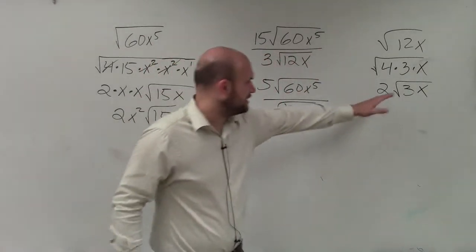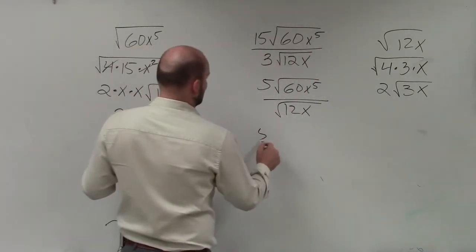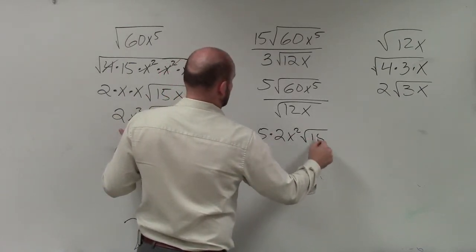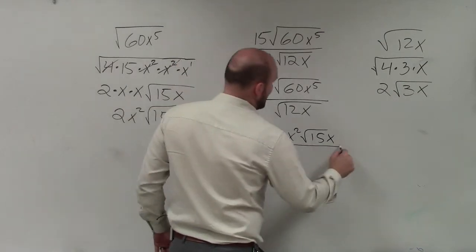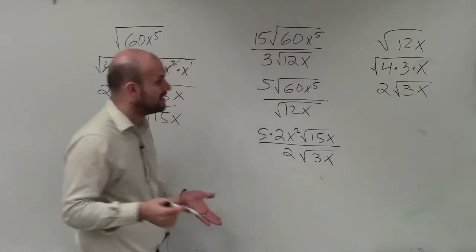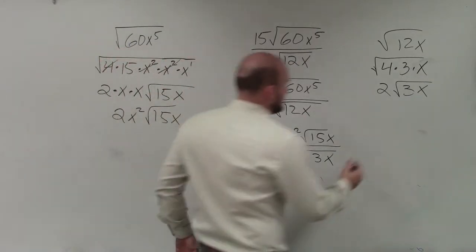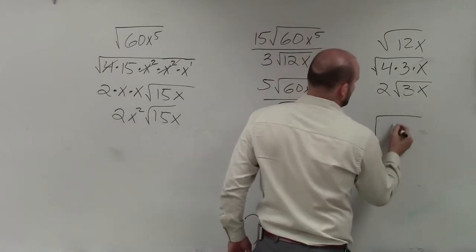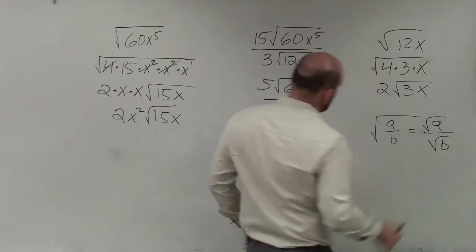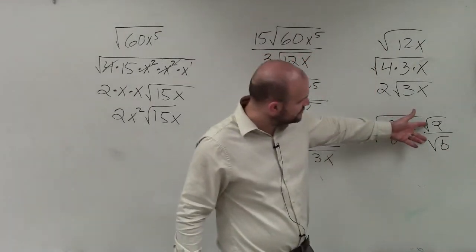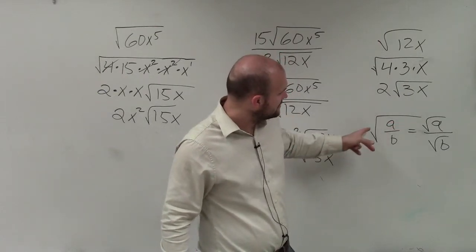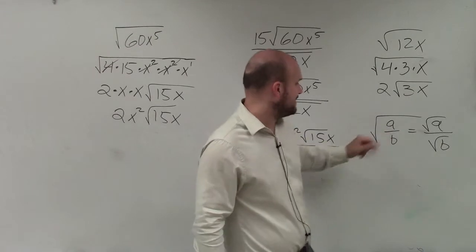So now, let's go ahead and rewrite those back in what we have here. So I have 5 times 2x squared times the square root of 15x divided by 2 times the square root of 3x. Now, what's really nice about when you're dividing radicals here is that the square root of a times b is equivalent to the square root of a over the square root of b. So therefore, if I have the division of two radicals, I can easily, if they divide into each other, rewrite them as the radical of a divided by b.